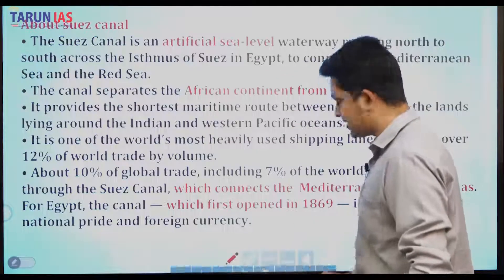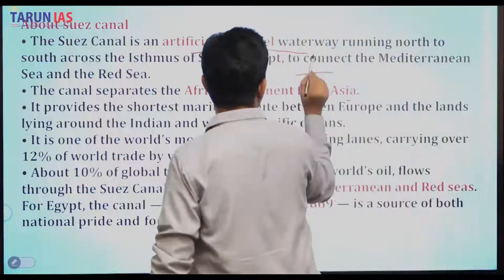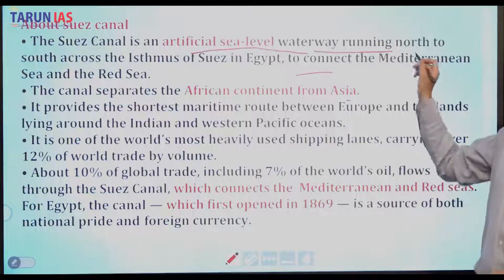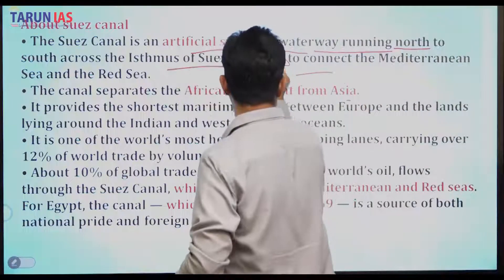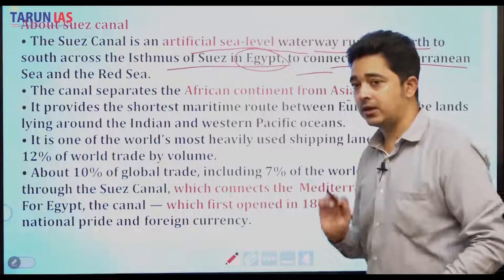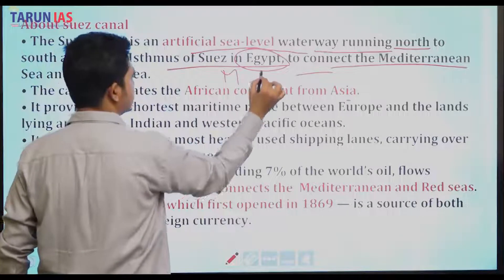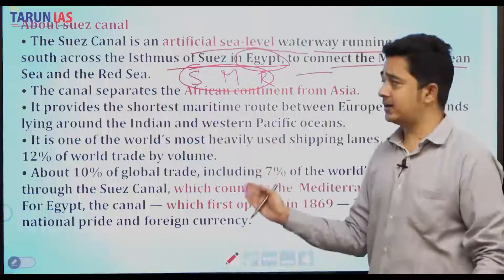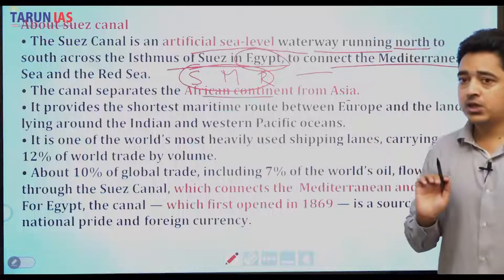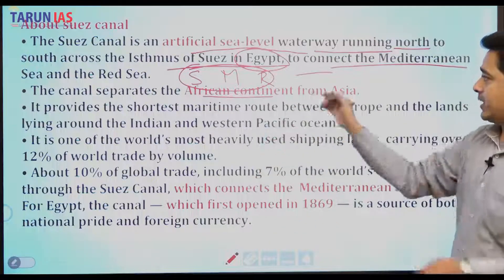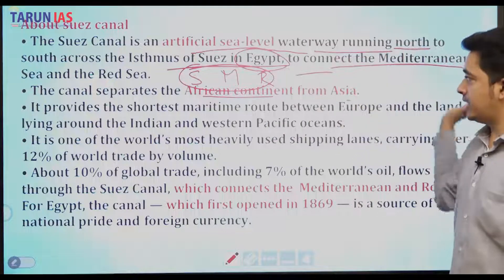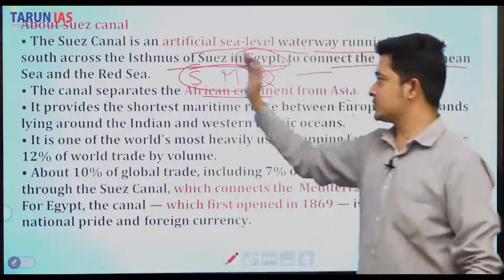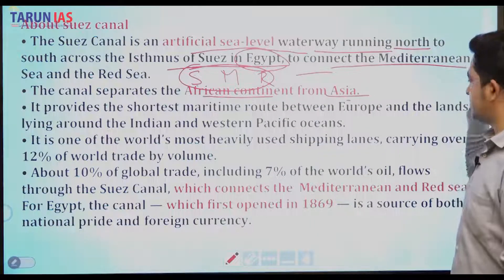The Suez Canal is an artificial sea-level waterway running north to south across the Isthmus of Suez in Egypt, connecting the Mediterranean Sea to the Red Sea — which you can confirm using an atlas. The canal separates the African continent from Asia. In your prelims exam, they may give a statement like 'the Suez Canal separates Africa from Europe' — that statement would be incorrect.